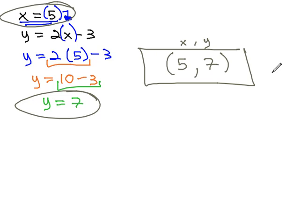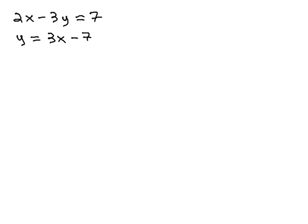We can extend this idea a bit further, and instead of just replacing a variable with the number it represents, we might have a problem such as this one. 2x minus 3y equals 7, and y equals 3x minus 7. Notice the second equation says y equals 3x minus 7. In other words, y is the same as 3x minus 7, or y can be represented by 3x minus 7.